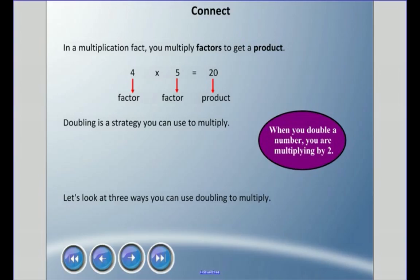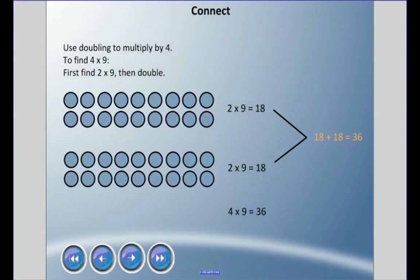Let's look at three ways you can use doubling to multiply. The first way is using doubling to multiply by 4. To find 4 times 9, first I could find 2 times 9 and then double it. So I have an array of 2 rows of 9, and 2 times 9 is 18.